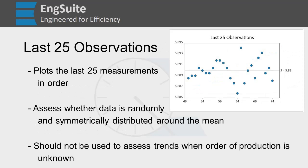Let's take a look at another graph — the last 25 observations. This one is pretty self-explanatory: it's the last 25 measurements plotted in order. This assesses whether the data is randomly and symmetrically distributed around the mean at the end of your process. Just like the individual value plot and the moving range plot, you should not use this if you do not know the order that the measured parts were in production.